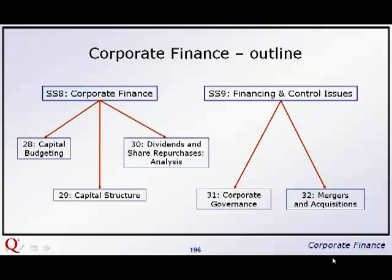Mergers and acquisitions is quite a detailed chapter, looking at some of the issues — lots of definitions of what mergers are, what the motivations are, how companies defend against them, various concentration indices like the Herfindahl-Hirschman index that you should already have seen at level 1, some comments on valuation methods, and looking at who benefits and who loses out when a bid takes place.